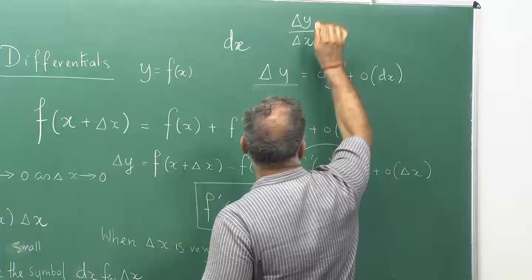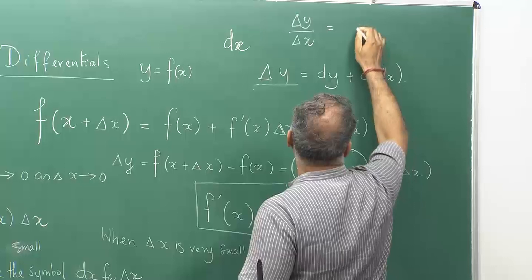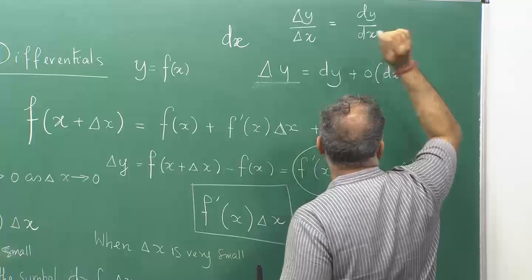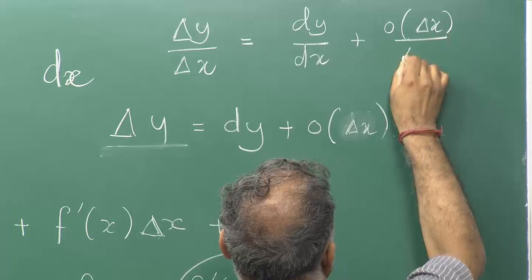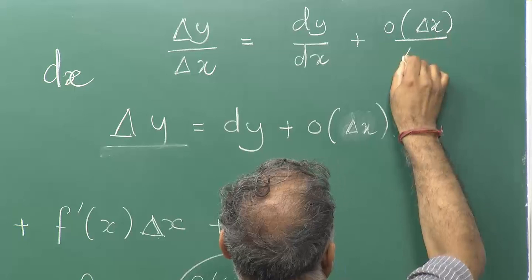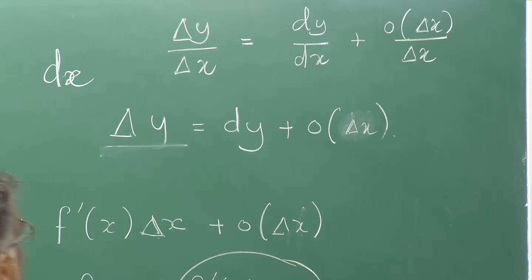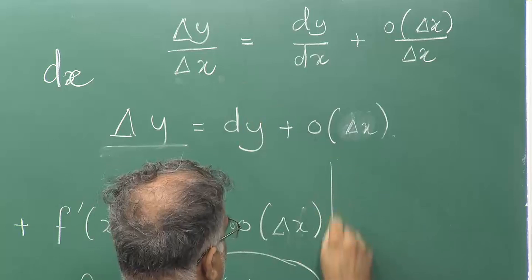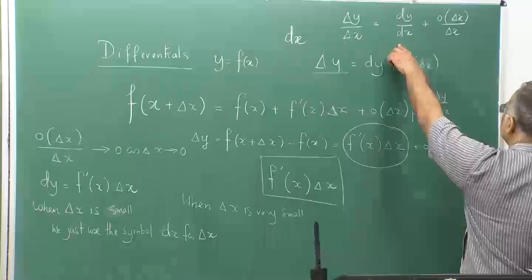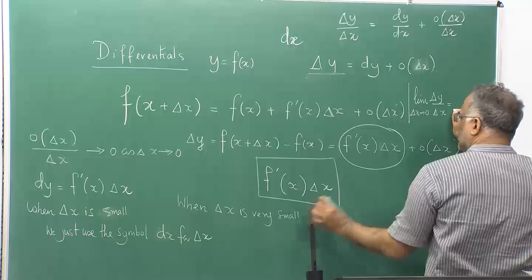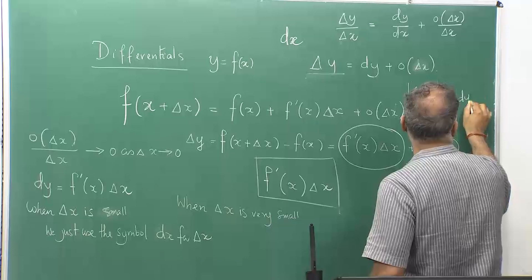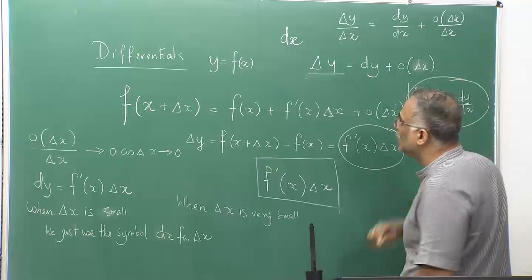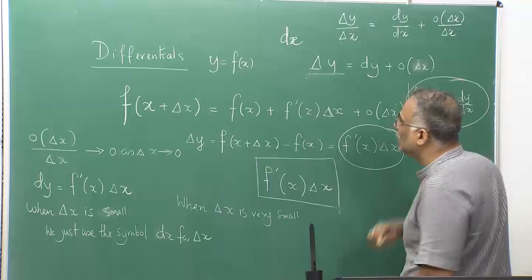If you now divide by Δx — if you have Δy/Δx, it is dy/Δx, but Δx is dx when dx is very small. Now take the limit as Δx → 0. So dy represents this very small change, this number is denoted as dy. This is nothing but dy/dx plus 0, because the error term goes to zero. So it gives me back the definition of the derivative.